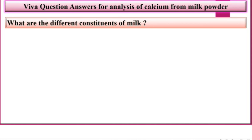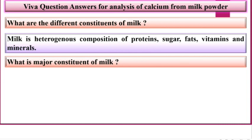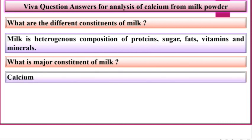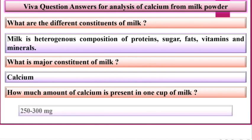What are the different constituents of milk? Milk is a heterogeneous composition of proteins, sugar, fats, vitamins and minerals. What is the major constituent of milk? Calcium is a major constituent of milk. How much amount of calcium is present in 1 cup of milk? 250 to 300 mg.